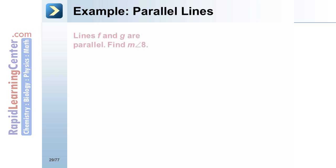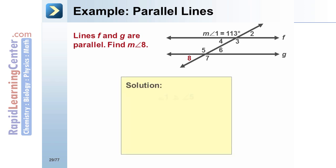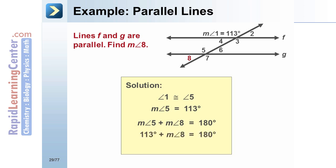Example: Parallel Lines. Lines F and G are parallel. Find the measure of angle 8. Solution: Angle 1 and angle 5 are corresponding angles, so they are congruent. Therefore, the measure of angle 5 is 113 degrees. Angle 5 and angle 8 are supplementary angles, so their sum is 180 degrees. Substituting 113 degrees: 113 plus the measure of angle 8 equals 180 degrees. Subtract 113 from both sides. The measure of angle 8 is 67 degrees.